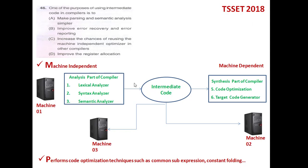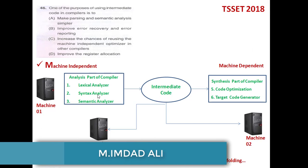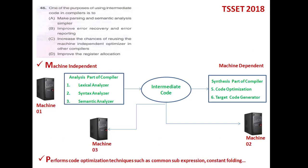In compiler construction there are two ends: the front end and the back end. The front end is also called the machine-independent or analysis part of a compiler, and the back end is called the synthesis part. The analysis part contains the first three phases: the lexical analyzer, syntax analyzer, and semantic analyzer.